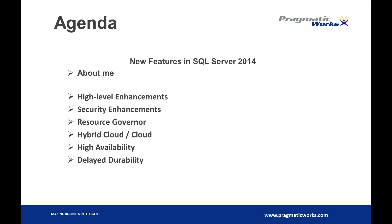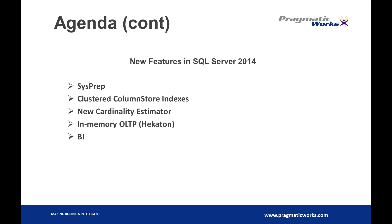We're going to look at some of the high availability stuff in 2014 and the new delayed durability feature that's been introduced, where you can actually make your transactions very quick but less durable. We're going to look at the SysPrep enhancements and the new clustered columnstore indexes introduced in 2014, which are built on the non-clustered columnstore indexes that came out in 2012. We'll also look at the new cardinality estimator, and of course the big stuff — in-memory OLTP. And there are a couple of new BI features we'll go over as well.